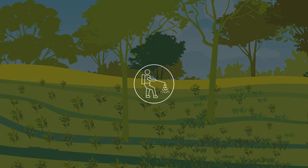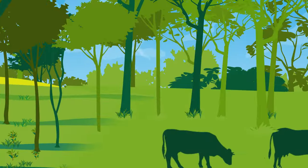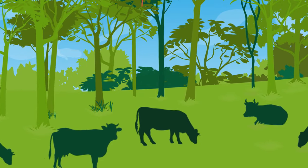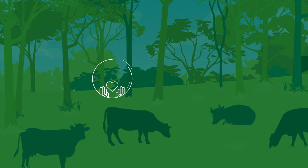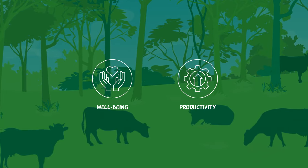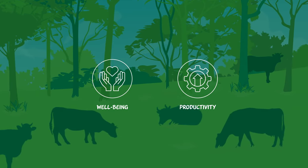Pesticides can also be reduced as intercropping generally lowers the incidence of pests and diseases. In silvopastures, trees reduce heat stress for livestock, increase their well-being and productivity, and provide fodder in times of scarcity.